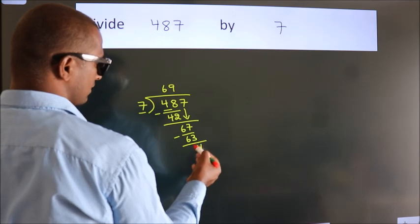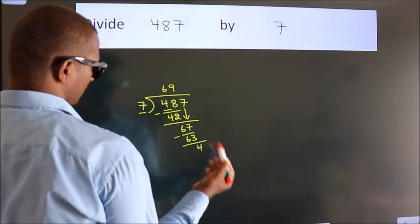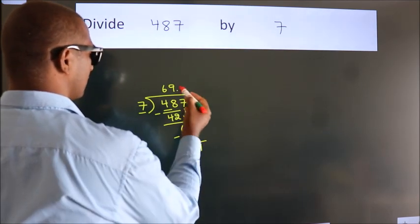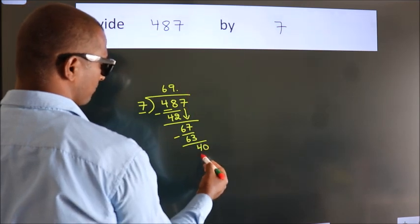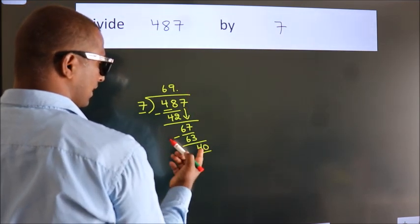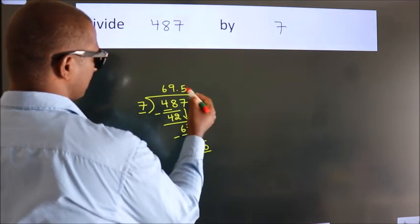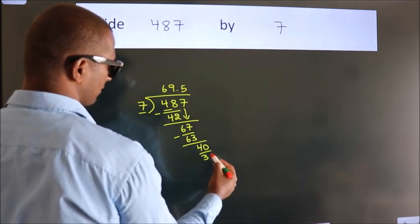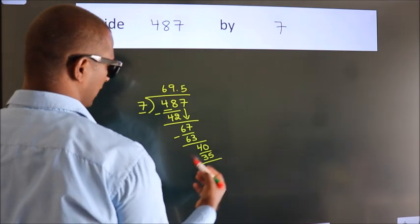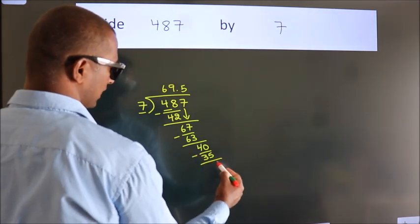After this, no more numbers to bring down. So what we do is, we put a dot, take 0. So 40. A number close to 40 in the 7 table is 7 times 5, 35. Now we subtract, we get 5.